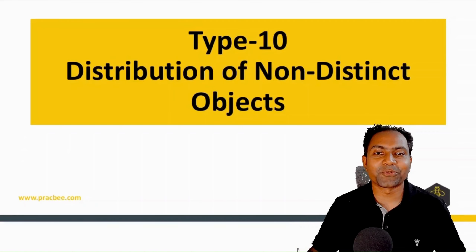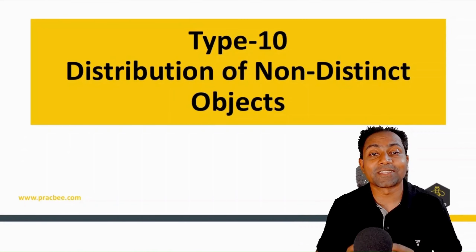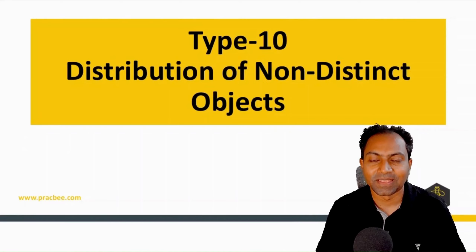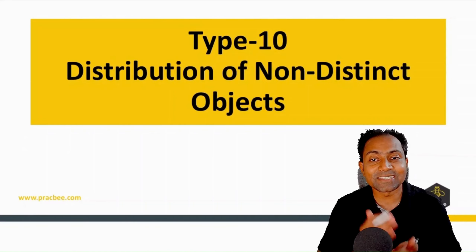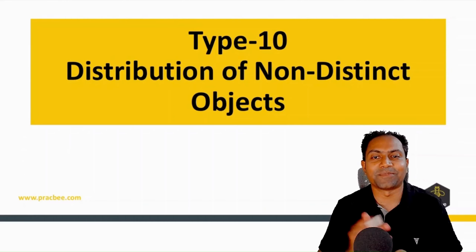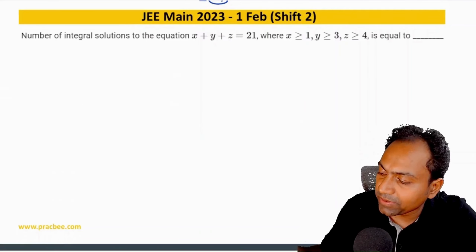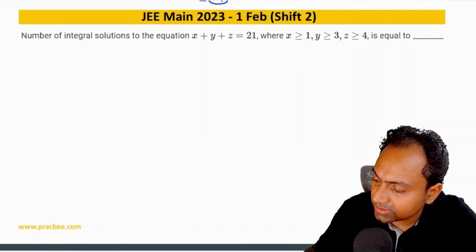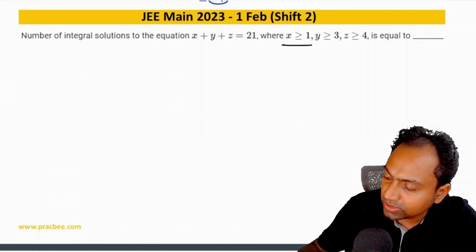Now let us move on to the Type 10 problem - distribution of non-distinct objects. These kinds of problems are a direct application of beggar's method. Let us see how these questions can be done. This next 2023 question is extremely simple - what we can do is put the values here using substitution.